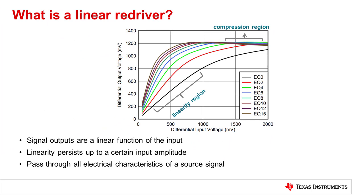A linear re-driver faithfully passes through all electrical characteristics of a source signal, just like a passive channel would, provided the signal is within the linearity range. The re-driver does not address reflection and crosstalk in the system. The reflection and crosstalk are passed on from the input to the output. A linear re-driver also amplifies the crosstalk along with the main signal, and therefore does not improve the signal-to-noise ratio.